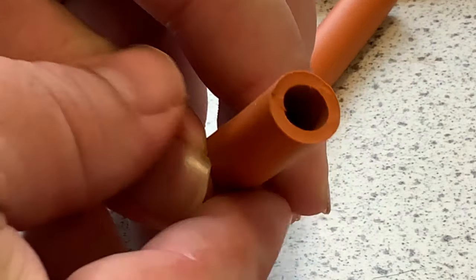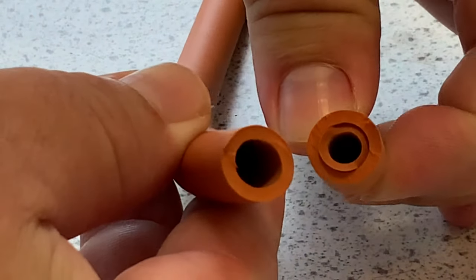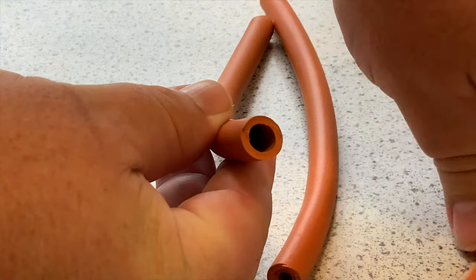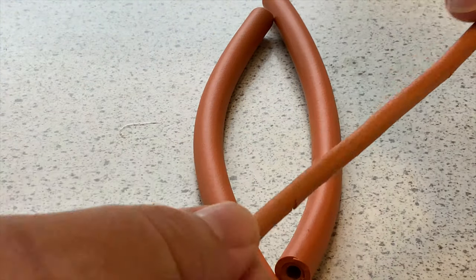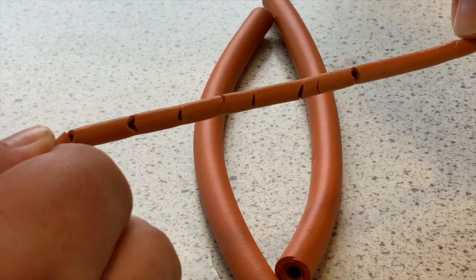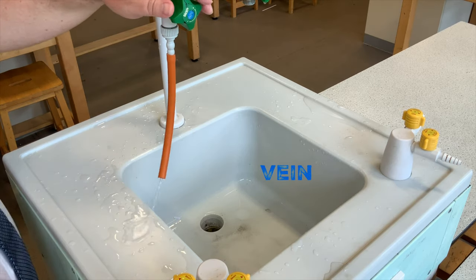So here we have a vein. The lumen's nice and wide. An artery with thicker muscular walls. And then our capillary, which is very fine. And it would be a lot smaller than that. Anyway, let's try the veins.